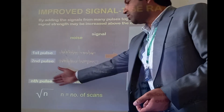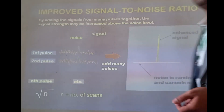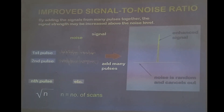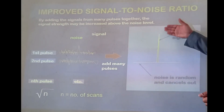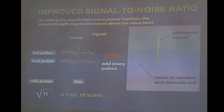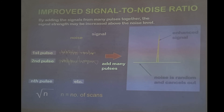So for any number of scans n, the signal-to-noise ratio is equal to the square root of n. After many pulses and many scans, you will have a very clear signal with minimum noise levels. This is how you can increase the signal-to-noise ratio and obtain a better, cleaner spectrum.